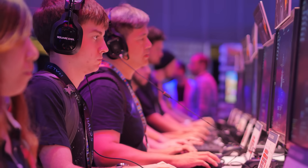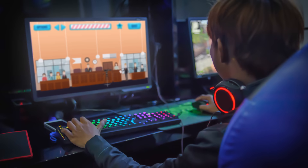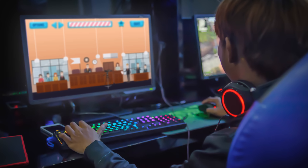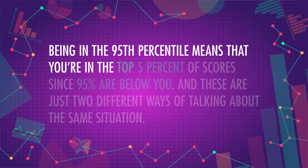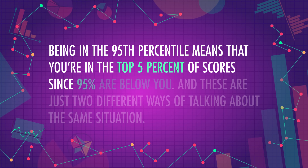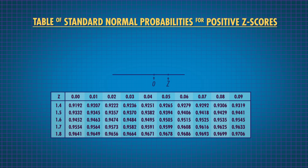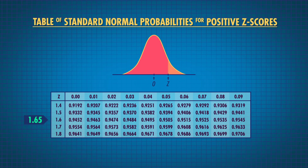Say you're competing for a spot at a local video game convention. The rules state that you must be in the top 5% of scores for your favorite game, Call of Civic Duty — a jury duty based video game. Scores of Call of Civic Duty are normally distributed, with a mean of 2,000 and a standard deviation of 300. You get 100 points each day you don't fall asleep. So you set out to find out what score would put you at the 95th percentile. Being in the 95th percentile means that you're in the top 5% of scores, since 95% are below you, and these are just two different ways of talking about the same situation. Looking at our z-score table, we can see that a z-score of about 1.65 would put you in the top 5% of Call of Civic Duty players.